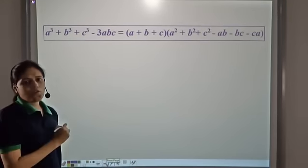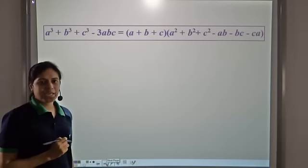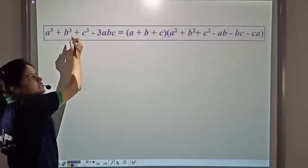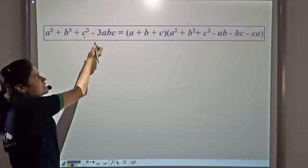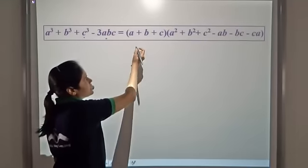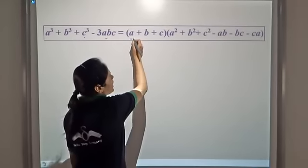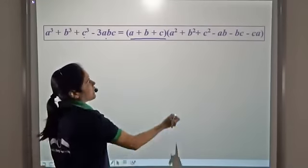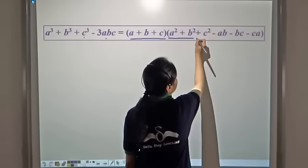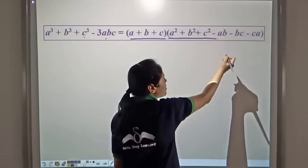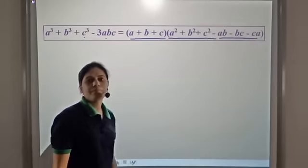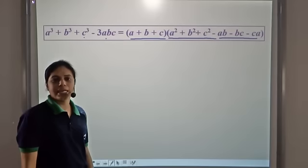It is true for all values of a, b, and c. a³ plus b³ plus c³ minus 3abc is equal to (a plus b plus c) into (a² plus b² plus c² minus ab minus bc minus ca).